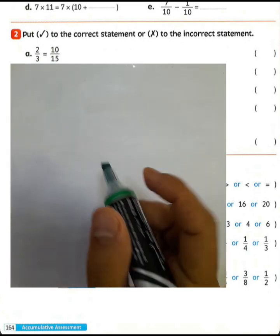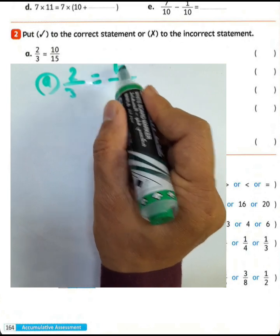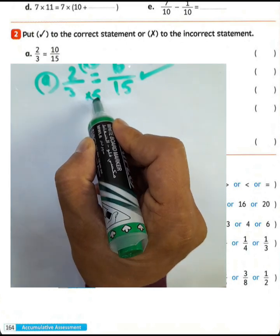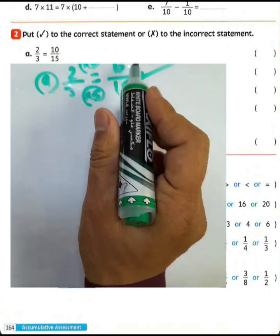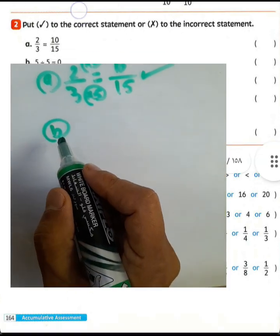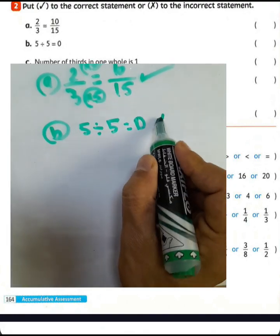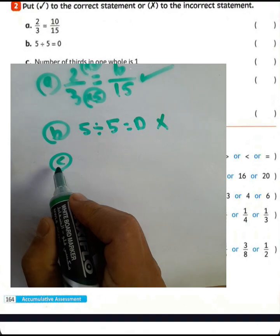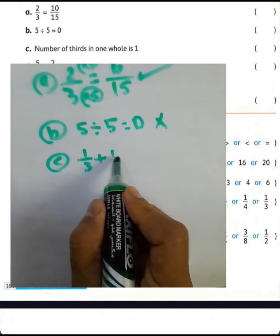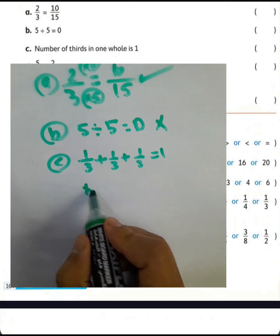Question letter A: We have 2 over 3 equivalent or not equivalent to 10 over 15. It will be true because multiply numerator and denominator by 5: 2 times 5 equals 10 and 3 times 5 equals 15. Letter B: 5 divided by 5 equals 1, so putting 0 here would be wrong. Number of thirds in 1 whole is 3, because one third plus one third plus one third equals 1. So question letter C is false.